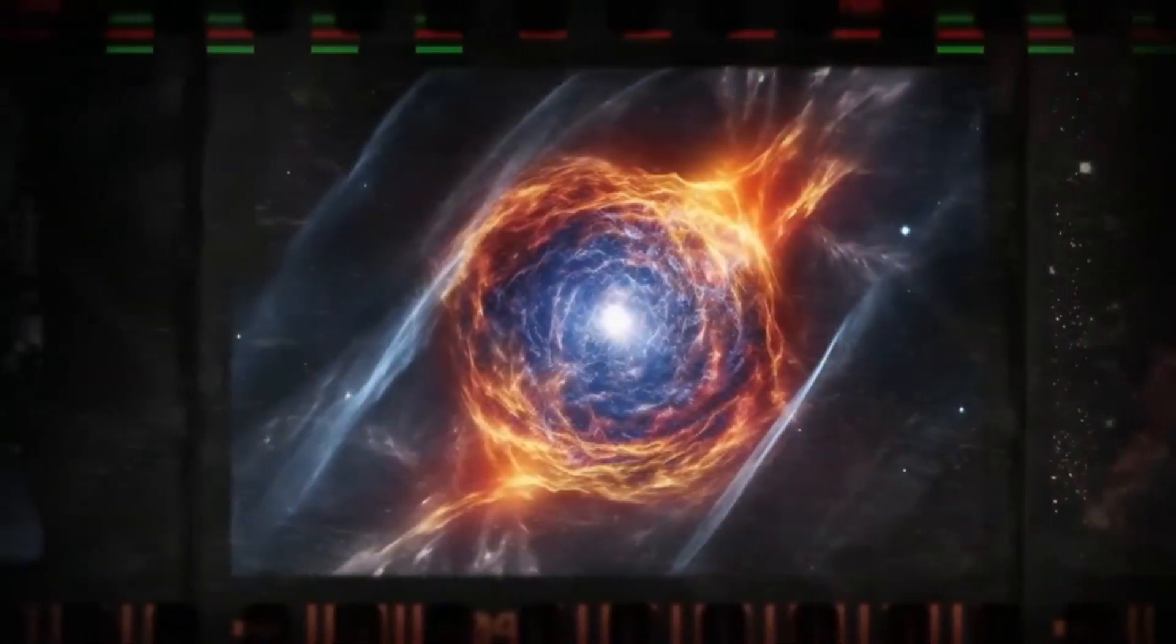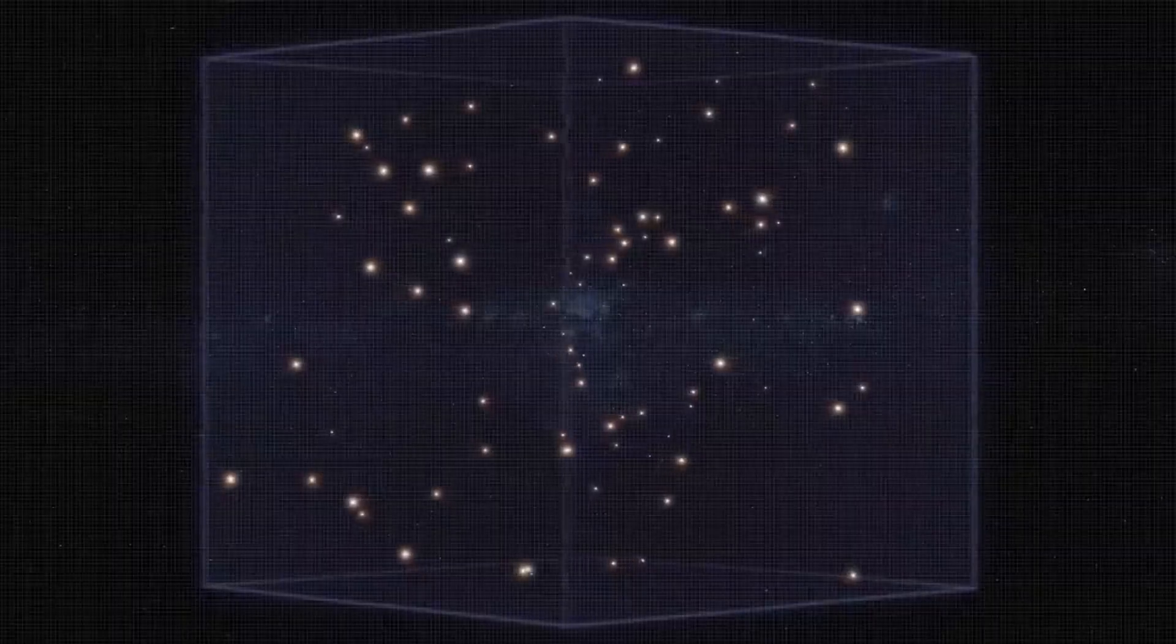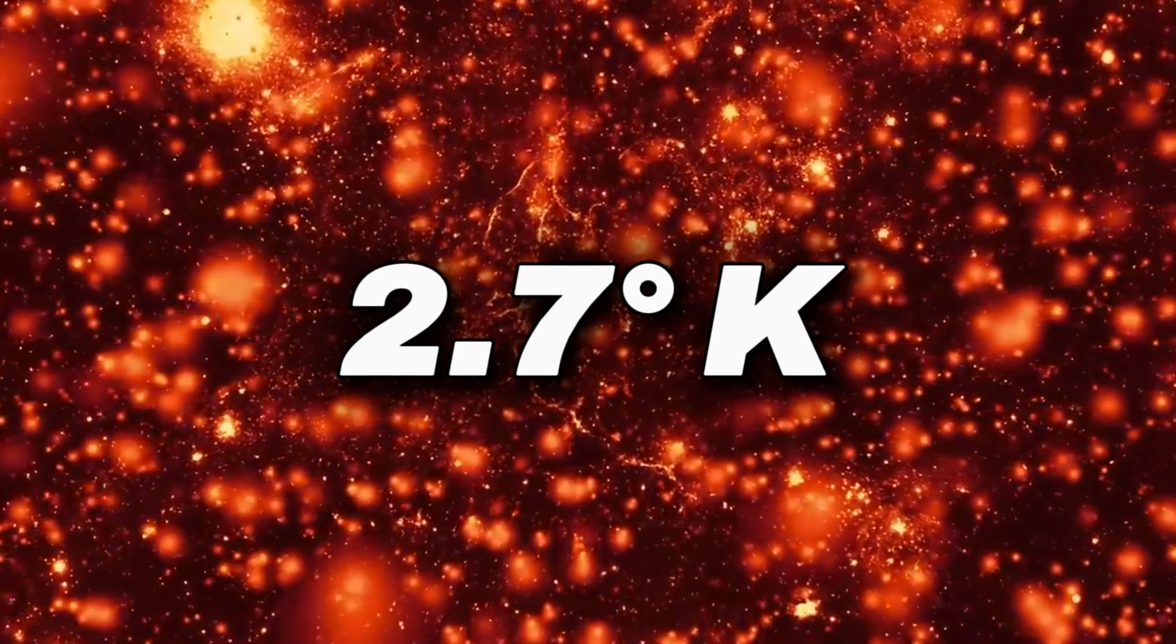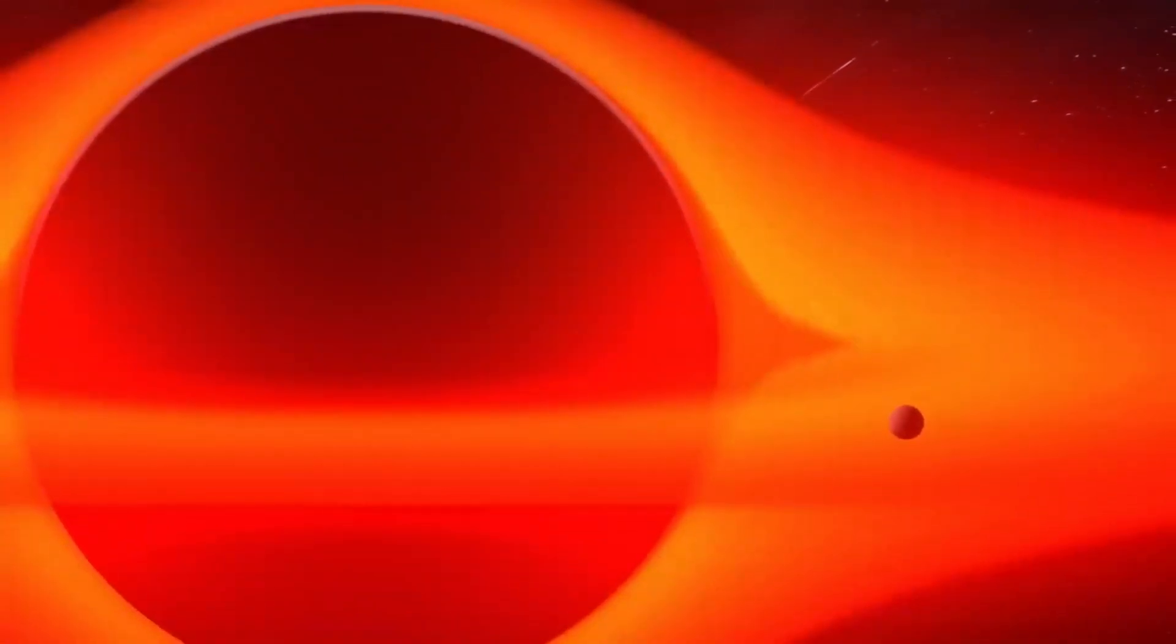Across its vast expanse, the universe has mysteriously consistent temperatures. Regardless of the direction researchers study, they measure a temperature of around 2.7 degrees Kelvin throughout the cosmos. This is something that shouldn't happen, and here's why.